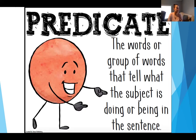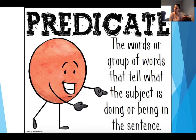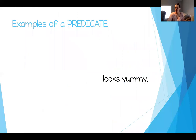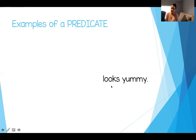A predicate — this is probably a new word for some of you, and that's okay. Say the word with me: predicate. A predicate is the words or group of words that tell what the subject is doing or being in the sentence. This is the part that's going to have a verb — a doing word, something that the object, person, or animal is doing or being. Here are some examples: 'looks yummy' — if I was talking about a piece of cake as my subject, I could say it looks yummy. The verb is 'looks.' That's the predicate.